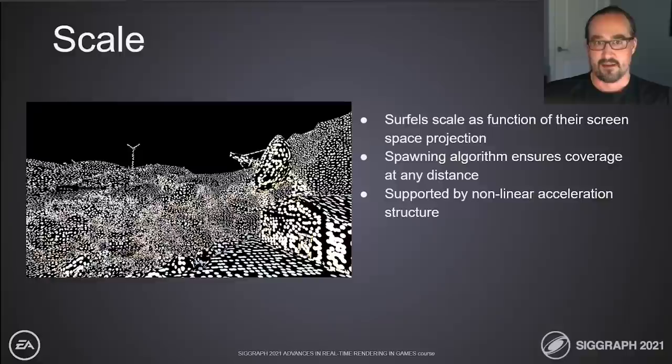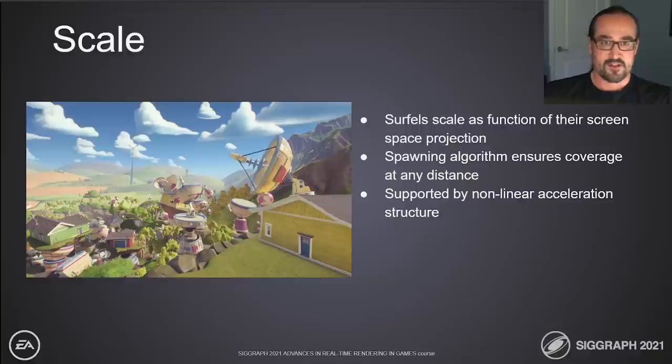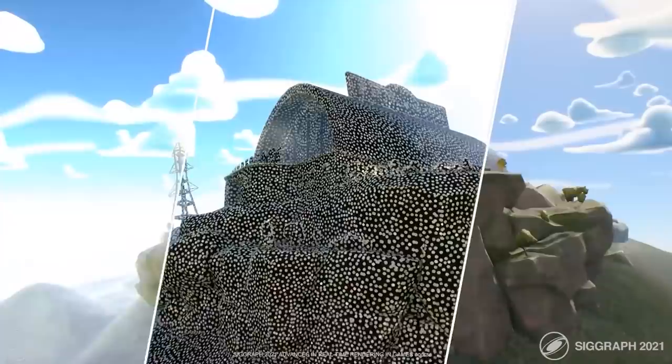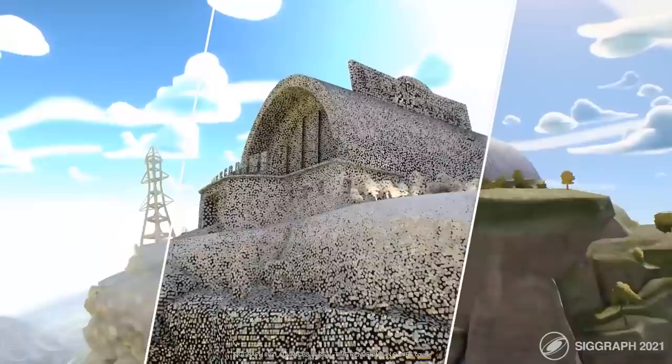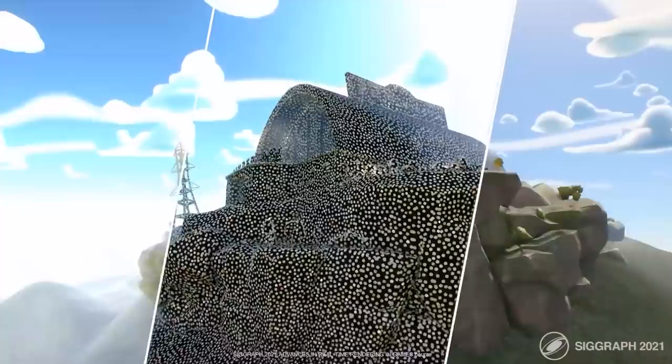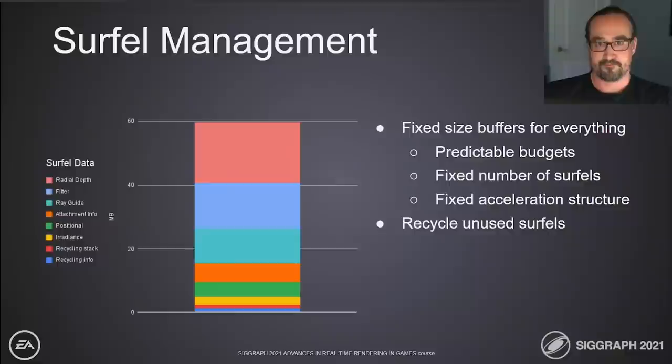The surfalization of the scene works at any distance. Surfels are scaled so that their projection in screen space is roughly constant — both when they spawn and as we move through the environment. As we approach geometry, surfels shrink and we spawn more to maintain the same ratio of surfels per screen-space area. The reverse is true when we back away — surfels grow and we can remove surfels where coverage is too high. The obvious impact is a constant level of quality at all distances, but the implication is the same for performance as well.